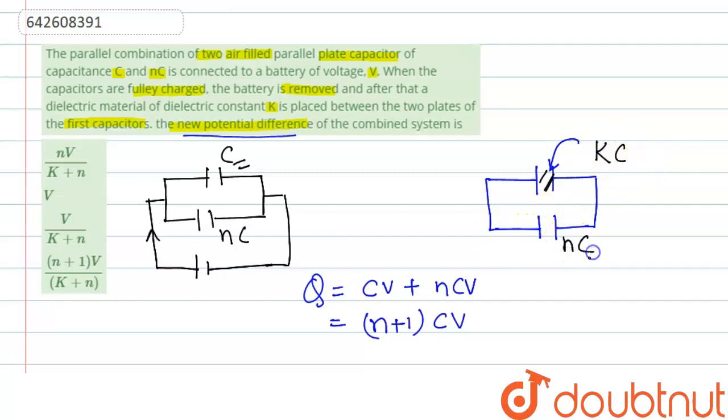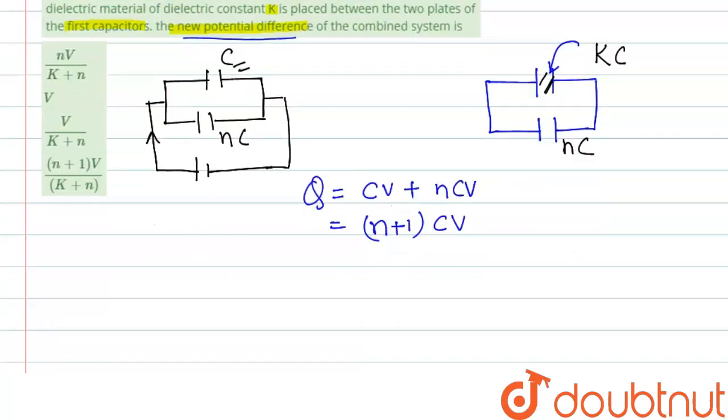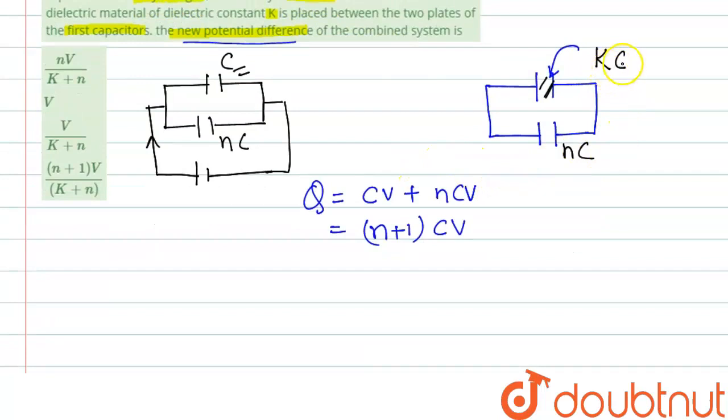So to find out the new potential difference, we have to first find out the capacitance equivalent, C_eq. As this is connected in parallel, we can write C1 + C2. Here C1 is kC plus C2 is nC. So if we take common C here, we can write (k+n)C.